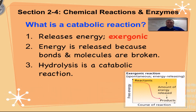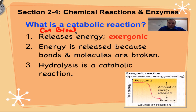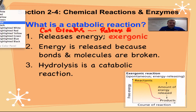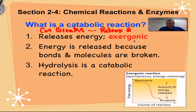Now, catabolic reactions — we've talked about these before. Our mnemonic is 'the cat breaks,' and whenever we break something we are going to release energy. When we release energy, we create what is known as an exergonic reaction. 'Gonic' refers to energy, and 'exer' means out — so this is energy out. We're releasing energy; it's leaving the chemical reaction.